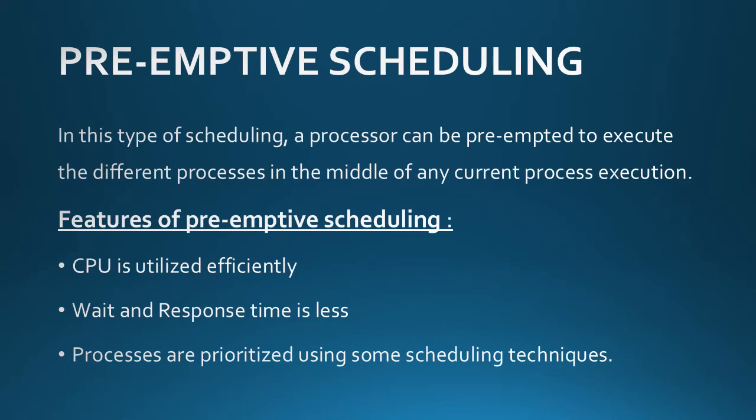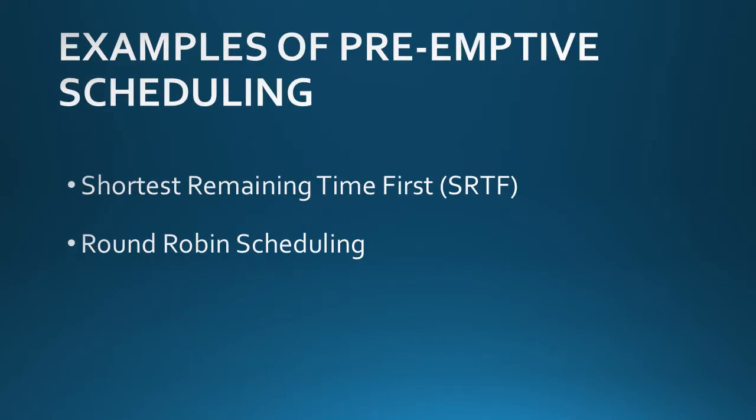Features of pre-emptive scheduling: CPU utilization is quite efficient, wait and response time is less, and processes can be prioritized using scheduling techniques. Examples of pre-emptive scheduling include Shortest Remaining Time First (SRTF) and Round Robin scheduling.